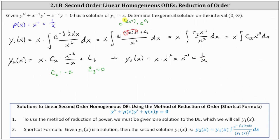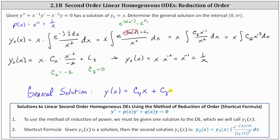So now we know y one equals x and y two equals one divided by x. Because these two functions are linearly independent, the general solution will be the linear combinations of these two functions. The general solution is y of x equals c sub four times y one, which is x, plus c sub five times y two, which is one divided by x. And this is the same solution we found using the longer method for reduction of order.